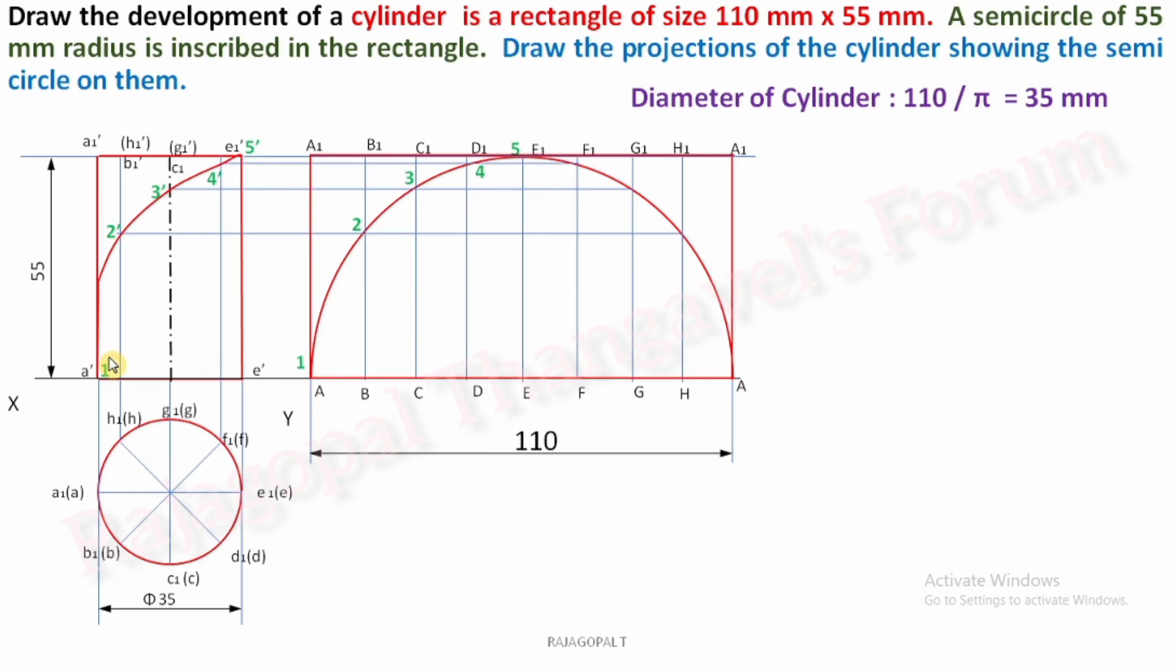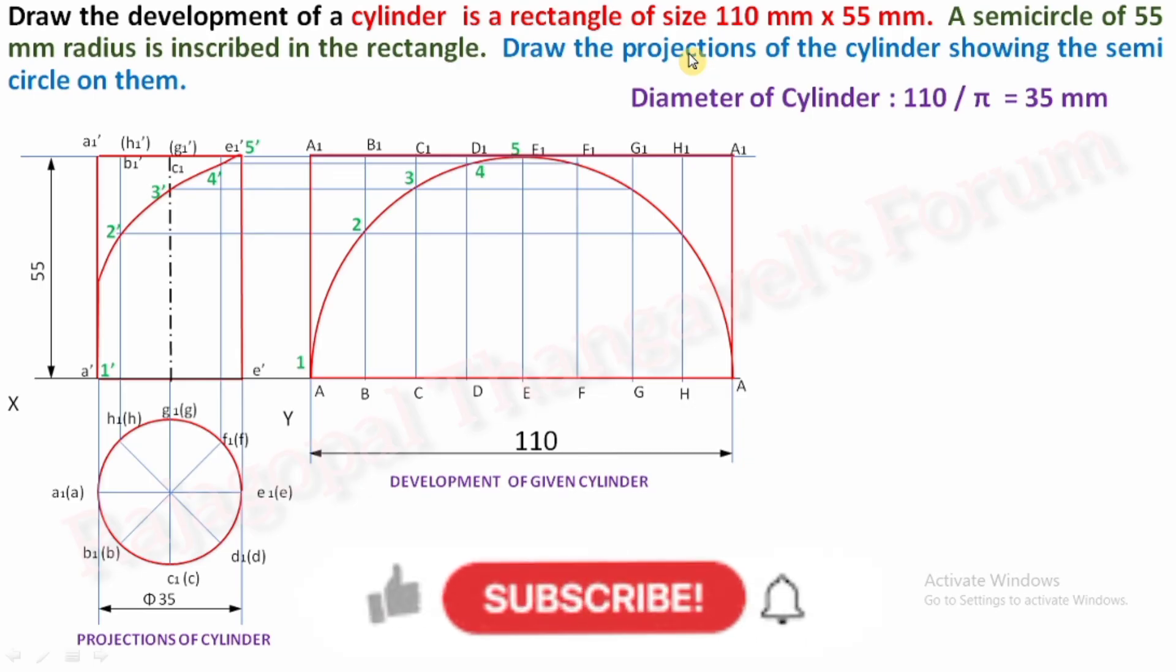1 dash to 2 dash, then 2 dash to 3 dash, 3 dash to 4 dash, 4 dash to 5 dash. So this is the development of cylinder, given cylinder this is projection of cylinder because our question is draw the projections of cylinder. Okay, so if you wish to check the vertical chimney problem or hexagonal prism insect problem, you can check the description box for a link or you can check the playlist for that development of surface playlist for that particular problems.